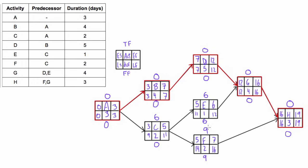For activity E, which is not on the critical path, we have 6 days we can delay it before it affects the end date of the project. If you delayed it by up to 6 days, instead of an early start of 5 you'd start at 11, finish on 12, bring that 12 up to G's predecessor, and you wouldn't affect G's start date — so G would still end at 16, and H's end date is unaffected. The free float of activity E is also 6 because free float is the amount of time you can delay an activity without affecting the earliest start of any of its successors. If you delayed E by 7 days, you would affect G's earliest start, which is why the free float is only 6.